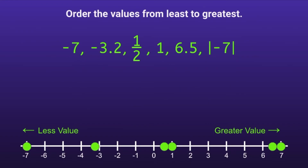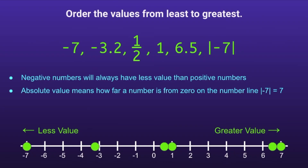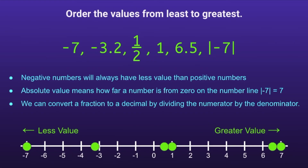There are a couple things to recognize when ordering numbers from least to greatest. First, negative numbers will always have less value than positive numbers, so they will be further left on the number line and listed first. Absolute value means how far a number is from 0 on a number line — that's what those bars meant around the negative 7. Finally, we can convert a fraction to a decimal by dividing the numerator by the denominator.